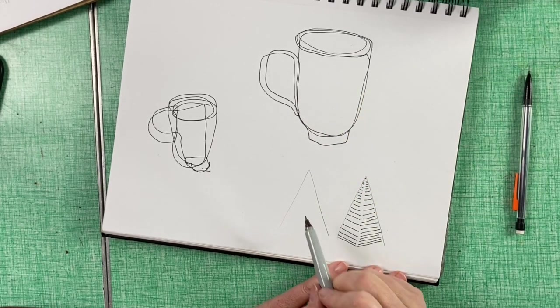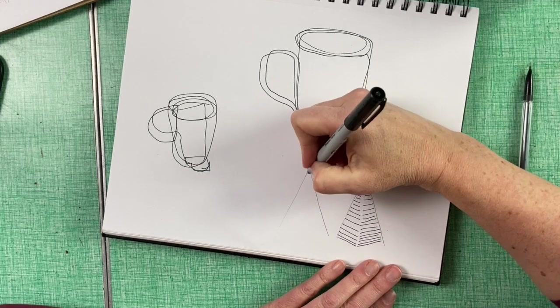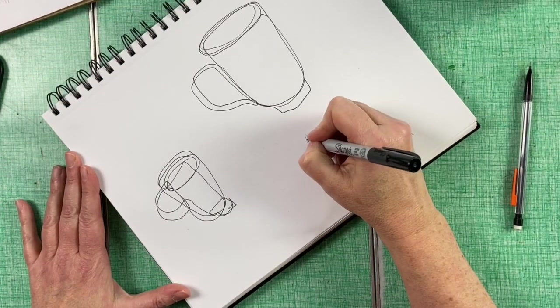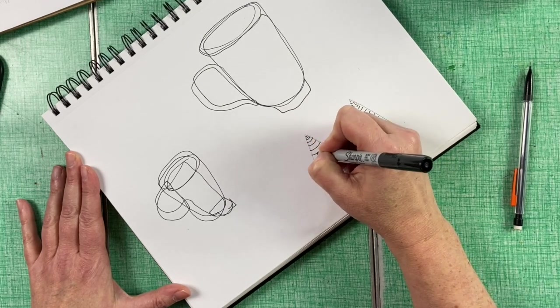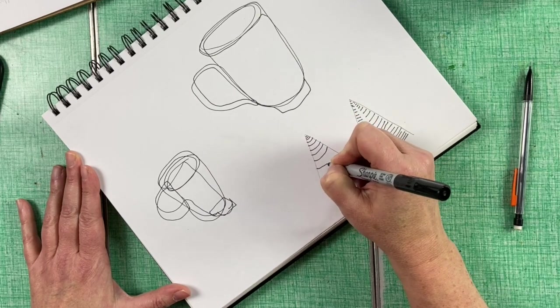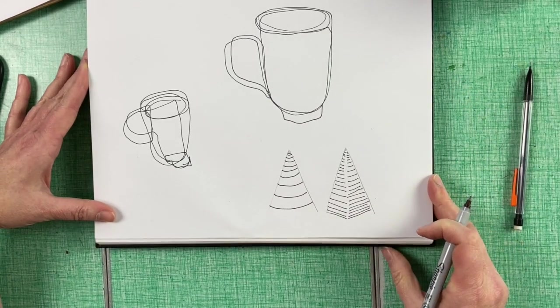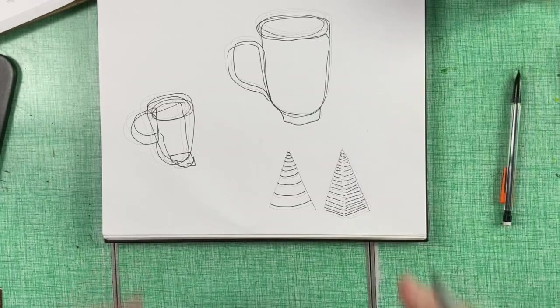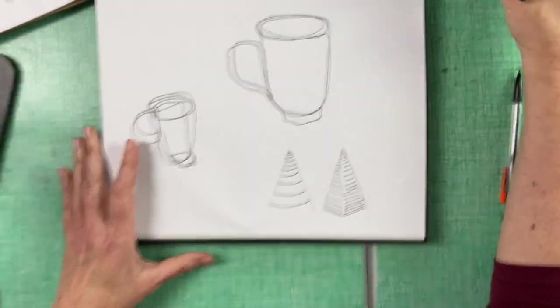But if I take the same triangle shape and apply different cross contour lines, I will turn my triangle, wait for it, wait for it, into a cone. They started out the exact same shape. But my cross contour lines were different. And so they gave a completely different volume to these shapes. So we can do a cross contour line with our mug.